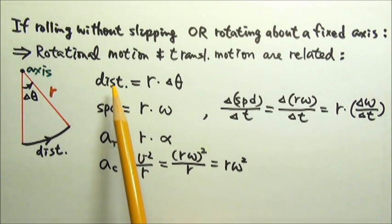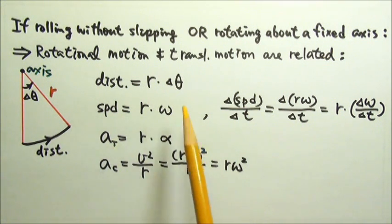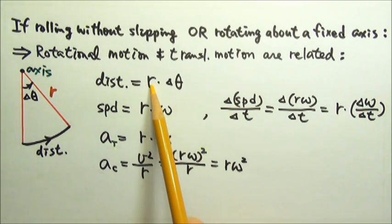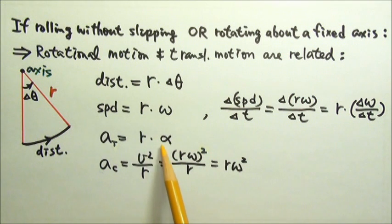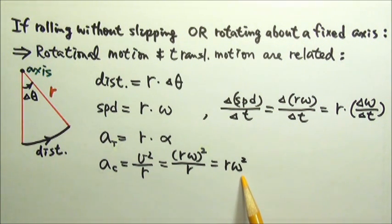So we can see that for translational motion—distance, speed, and tangential acceleration—we can multiply r by the angular values to get those. As for the centripetal acceleration, v squared over r, it is also r times omega squared.